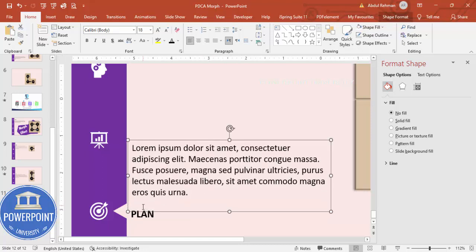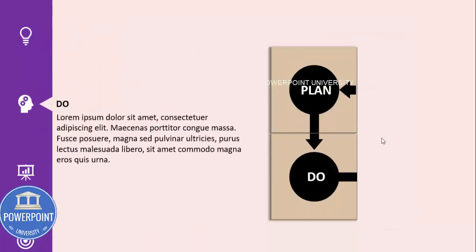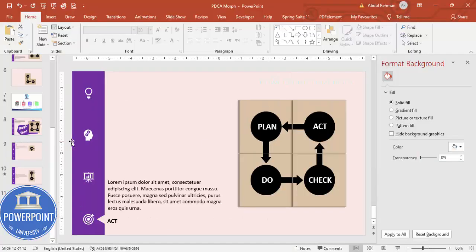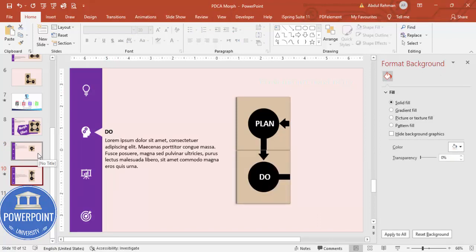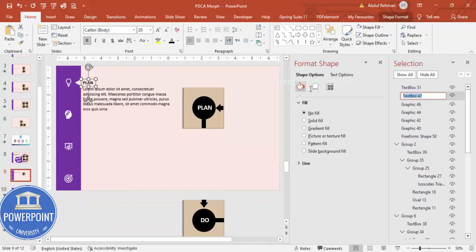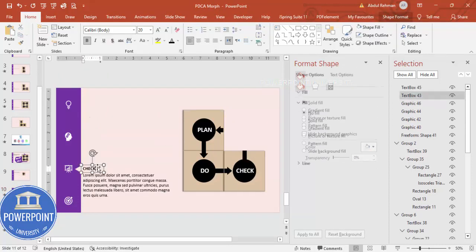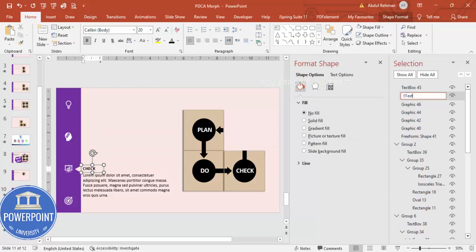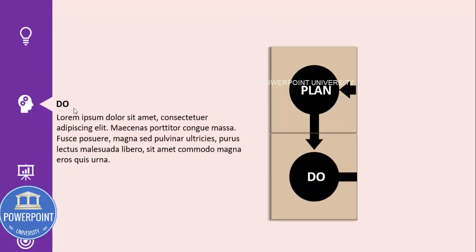Move things slightly so you can change the last label to 'Act'. Play again to confirm the full PDCA sequence looks correct. For a smoother morph transition between matching elements, open the Selection Pane and rename the shape with a double exclamation mark prefix, such as '!!text'. Copy this exact name to the same element on each slide so PowerPoint knows to morph between them.